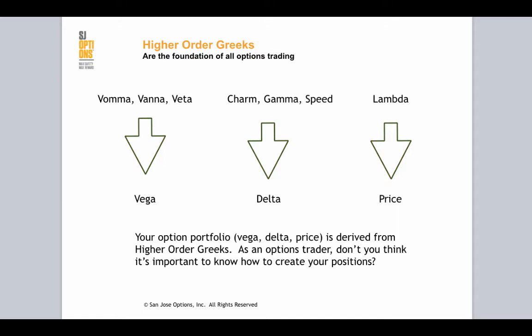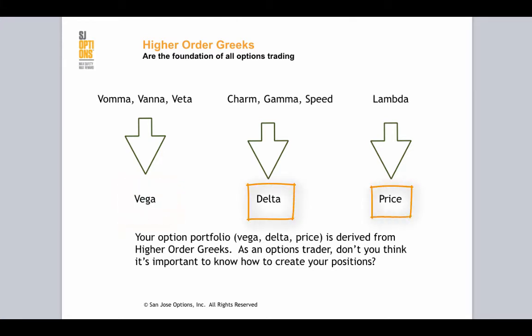On the left side here, you see Vega. In the middle, we have Delta. We have our price, which isn't actually a Greek, but it's obviously the most important element to option trading.